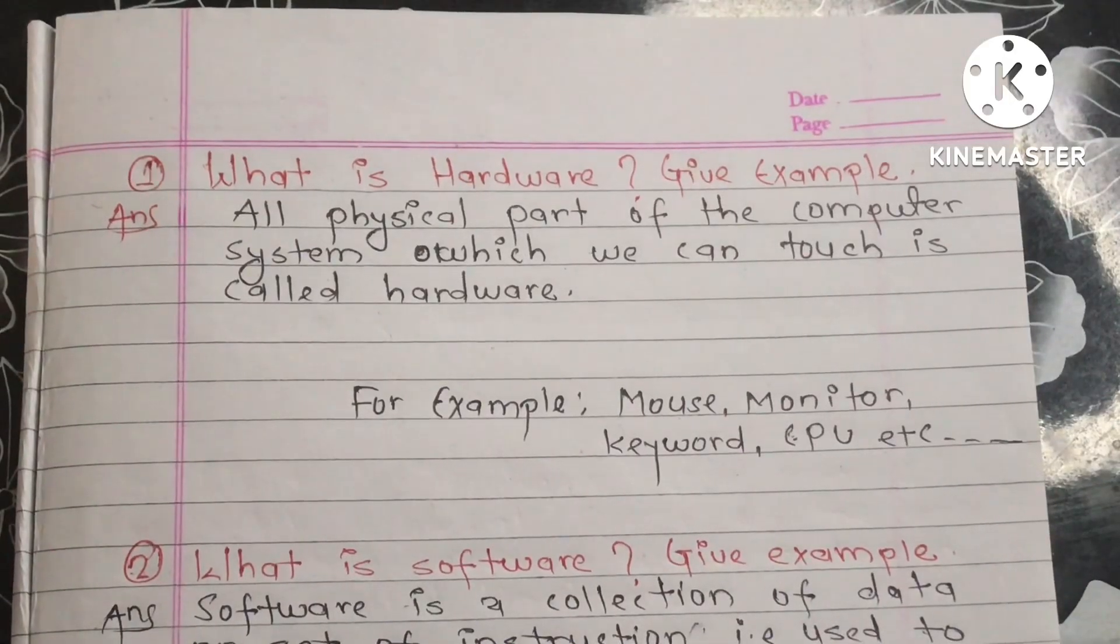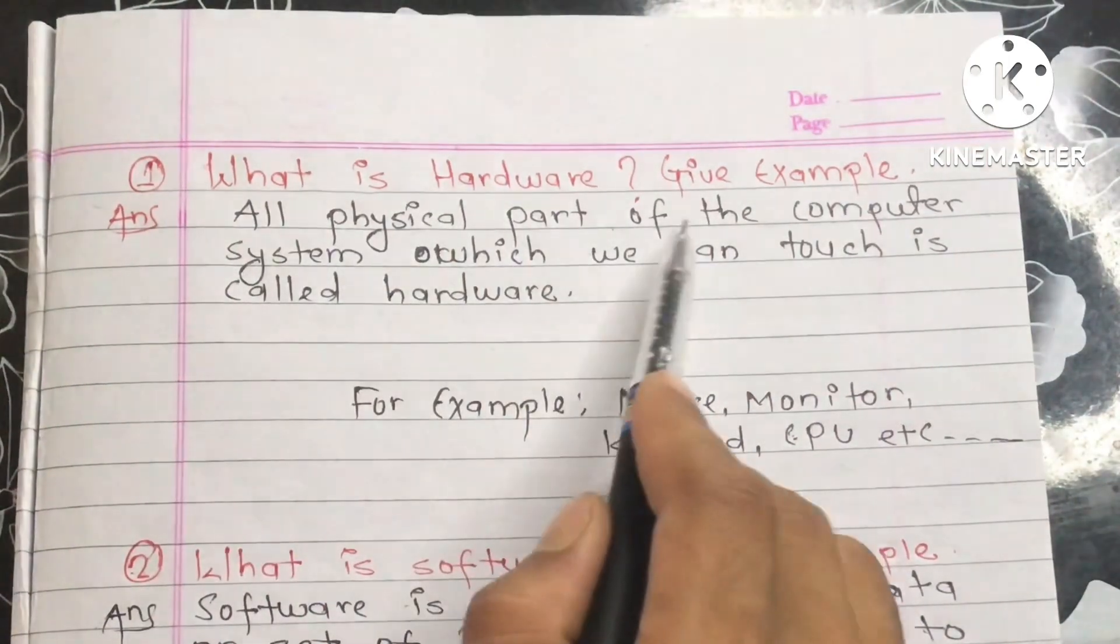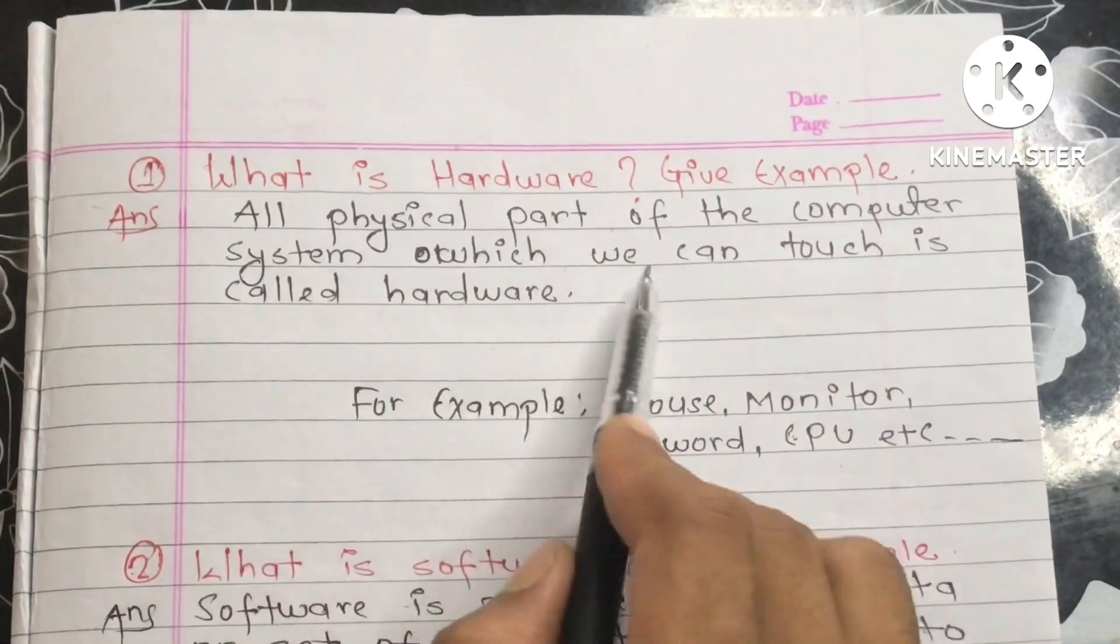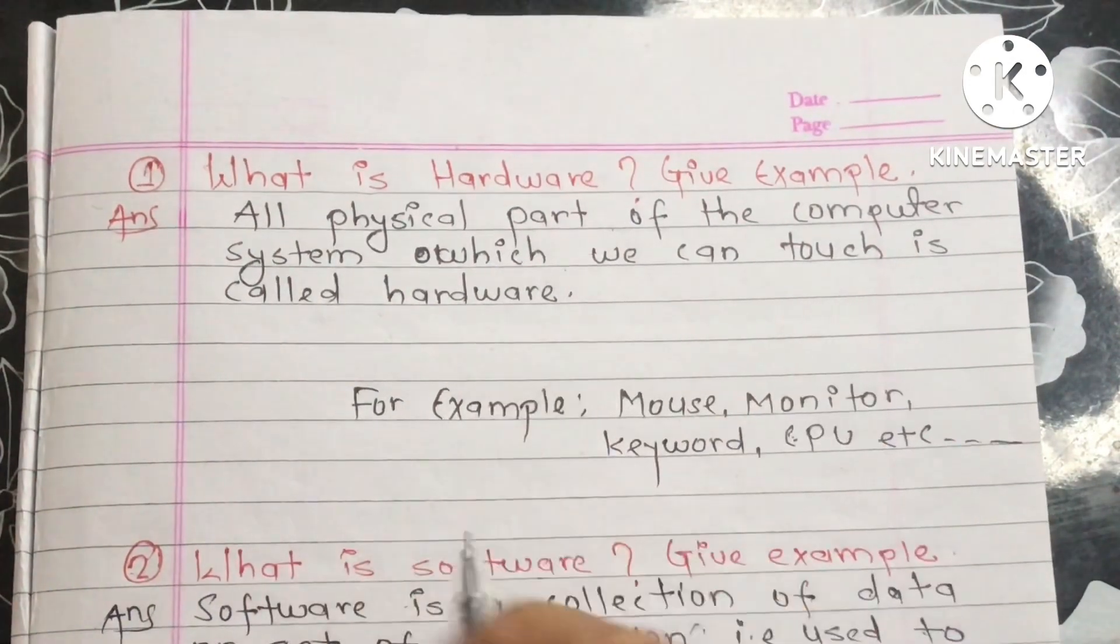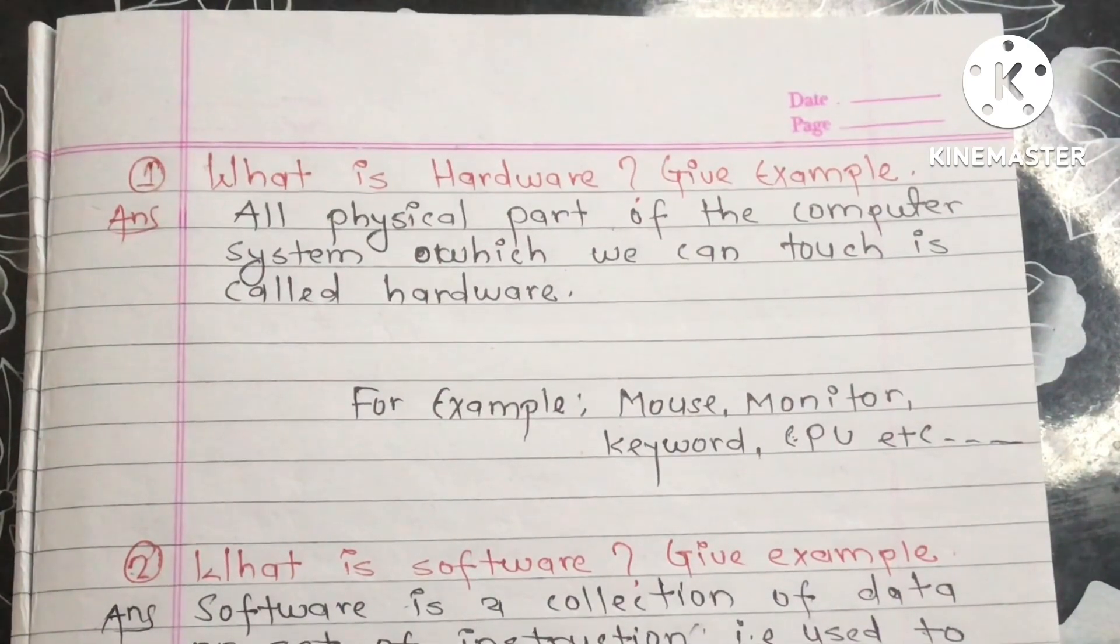What is hardware? Give example. All physical parts of the computer system which we can touch are called hardware.